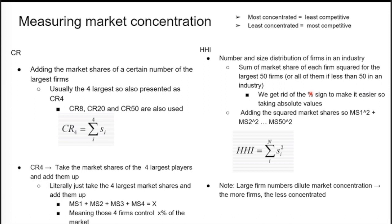The HHI (Herfindahl-Hirschman Index) is an alternative measure that looks at the number and size distribution of firms in an industry. You sum the squared market shares of each firm for the largest 50 firms. Remove the percentage sign, take absolute values, and square each market share: (market share of firm 1)² + (market share of firm 2)² + ... up to 50. Large numbers of firms dilute market concentration — the more firms, the less concentrated the market.